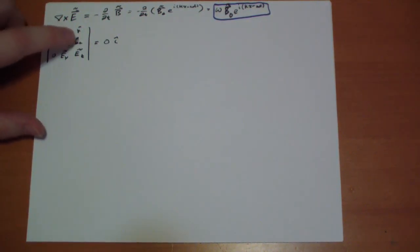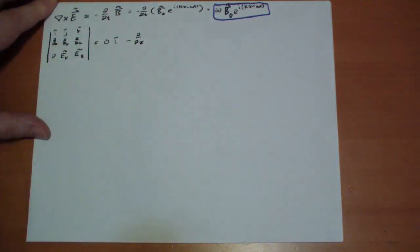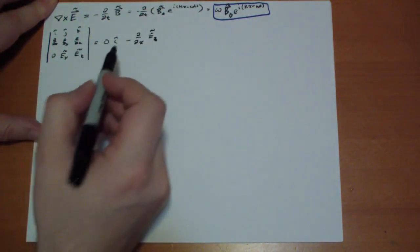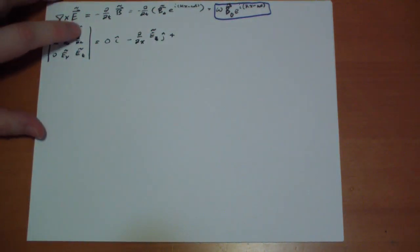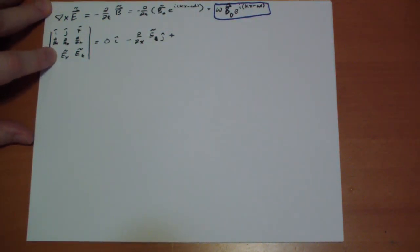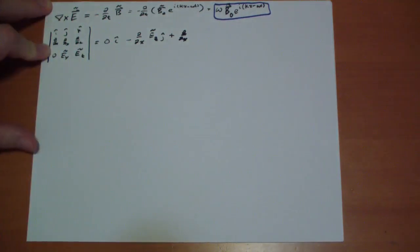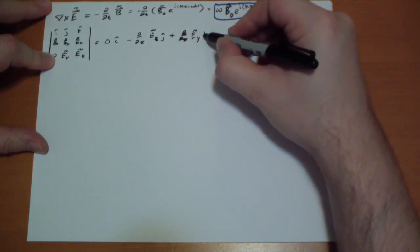Then we have for the j, we have D by DZ of zero, minus D by DX of the Z component of the field. And then we have our k, this is the j hat direction, and then for k, we have the derivative with respect to X of the Y component. So we have D by DX EY vector in the k hat direction.